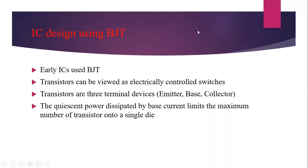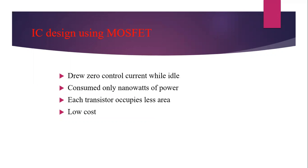Early integrated circuits used BJT for operation, but since BJT is a current control device the power consumption is very high. This limits the number of transistors on a single chip — you cannot add more transistors because of power dissipation. This is the main disadvantage of using BJT for ICs. For that reason we move to MOSFET, which is a voltage control device with very less power consumption, smaller transistor area, and lower manufacturing cost compared to BJT.